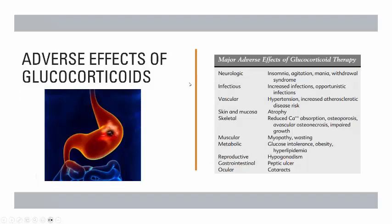There are some adverse effects of glucocorticoids affecting various systems. Neurological: insomnia, agitation, mania, withdrawal syndrome. Infectious: increased risk of infections and opportunistic infections. Vascular: hypertension and increased atherosclerotic disease risk. Skin and mucosa: chances of atrophy. Skeletal system: reduced calcium absorption leading to osteoporosis, avascular osteonecrosis, and in children, impaired growth.